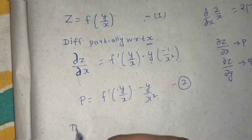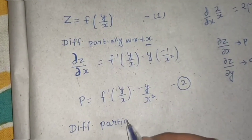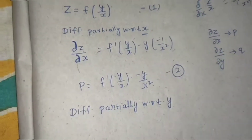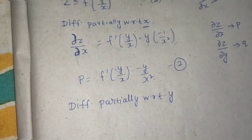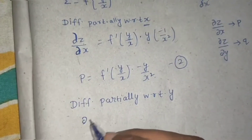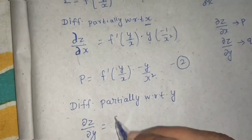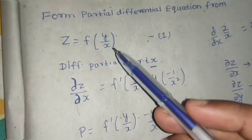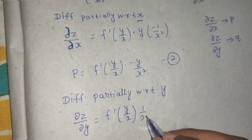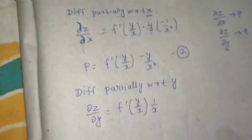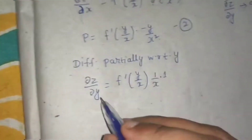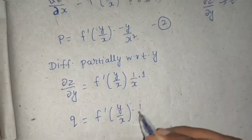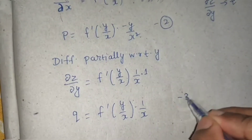We do the same again — differentiate partially with respect to y this time. When differentiating partially with respect to y, x is treated as constant. So del z / del y equals f'(y/x), then the derivative of y/x: since x is constant, take 1/x outside, and the derivative of y with respect to y is 1. So del z / del y, which is q, equals f'(y/x) · (1/x). Treat this as equation number three.